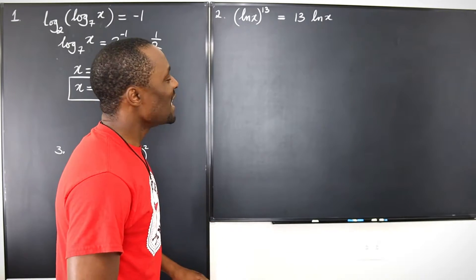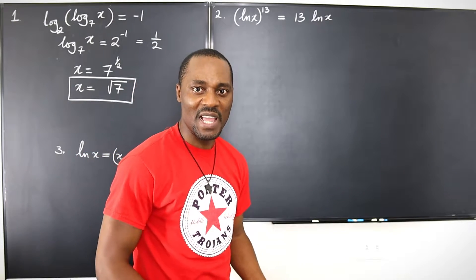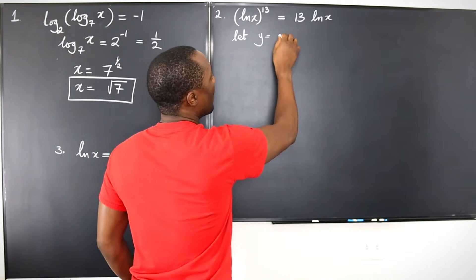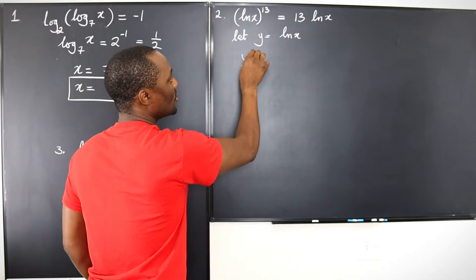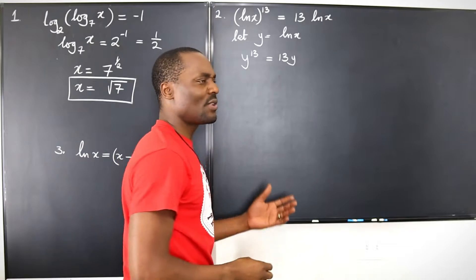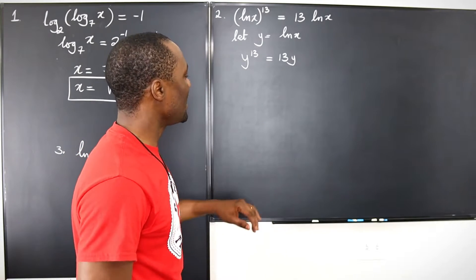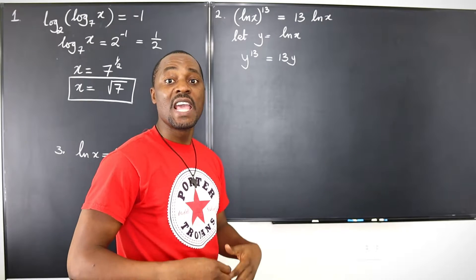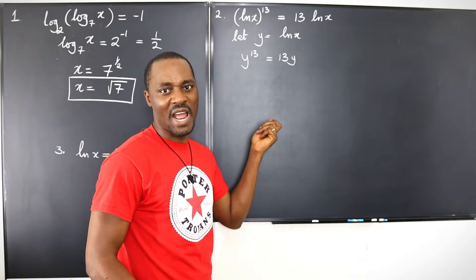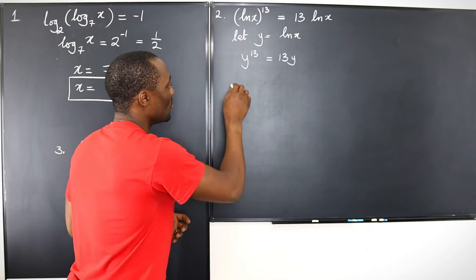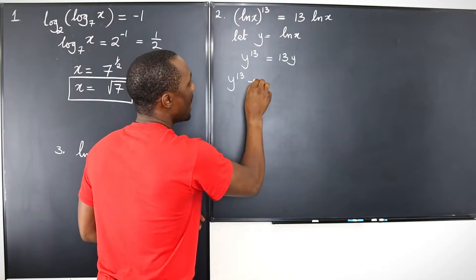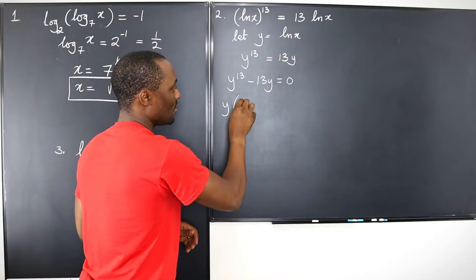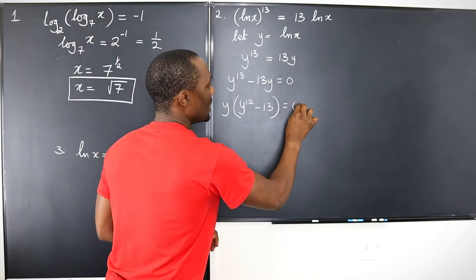What you want to do is replace ln(x) with something easier to work with. Let y equal ln(x), so we can rewrite the equation. It becomes y to the 13 equals 13y. Now this looks a lot easier to deal with. Don't divide both sides by y — move this to this side and leave zero here, as if you're going to solve a quadratic equation. So we get y to the 13 minus 13y equals zero. You can now factor y, and you're left with y times (y to the 12 minus 13) equals zero.